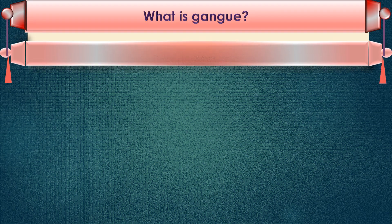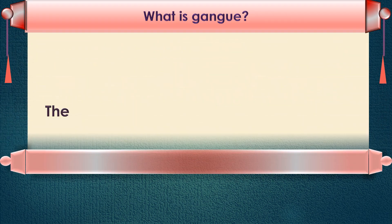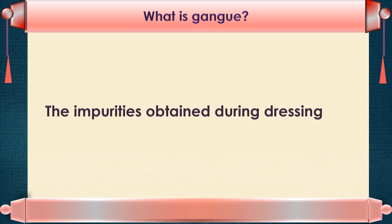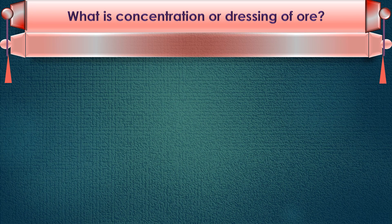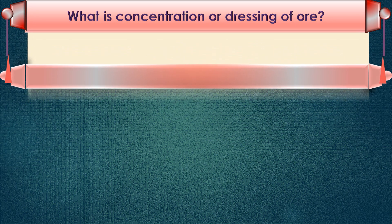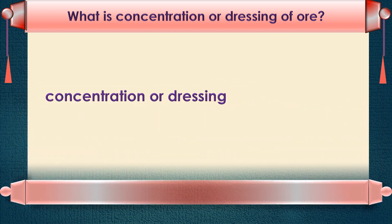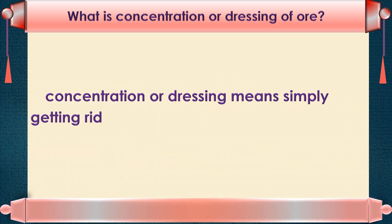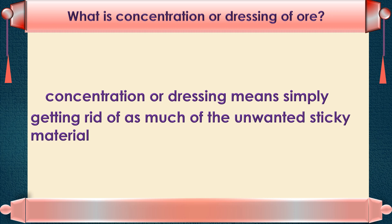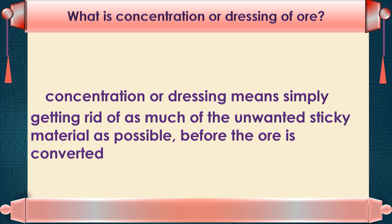What is Gangue? The impurities obtained during dressing of ore are called Gangue. What is concentration or dressing of ore? Concentration or dressing means getting rid of as much of the unwanted rocky material as possible before the ore is converted into metal.